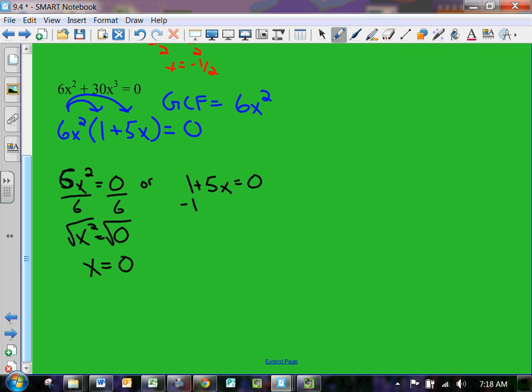And subtracting one from both sides, five x equals negative one, and dividing by five on both sides, x equals negative one-fifth. So thinking about your graph again, those parabolas, it's a really small one, so you've got one at negative one-fifth and one at zero. Imagine that's pretty small, but negative one-fifth and zero are the roots.